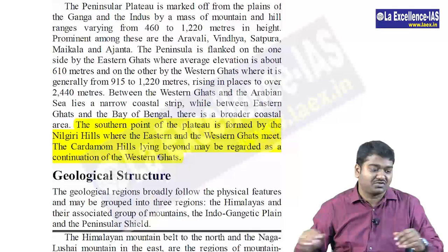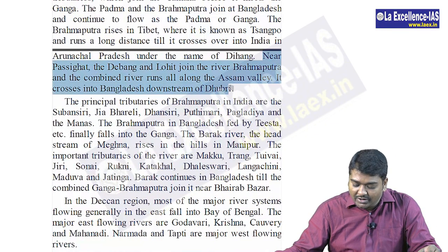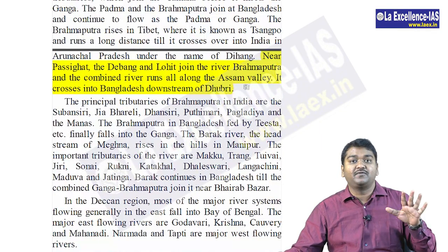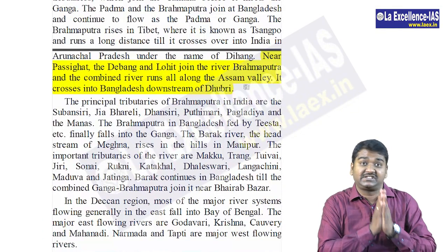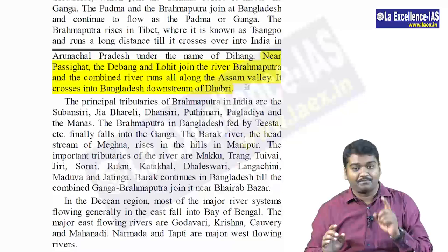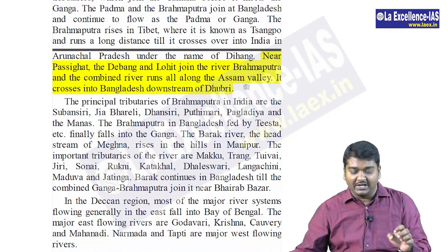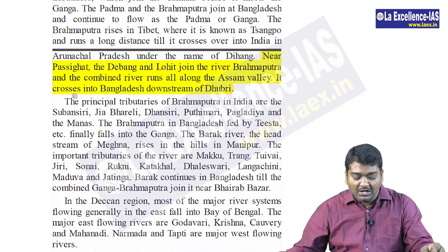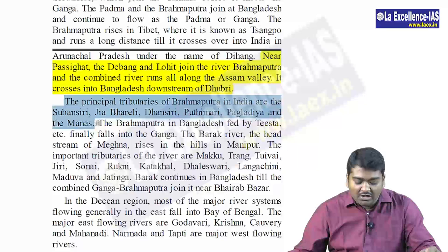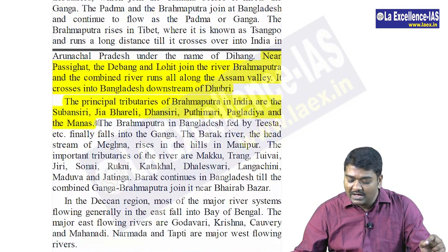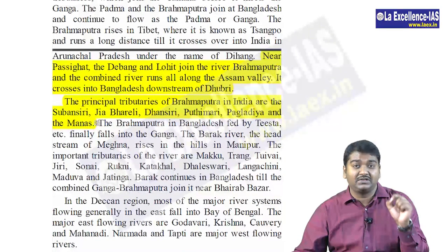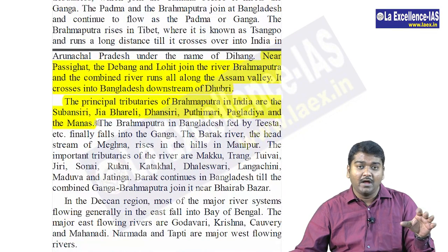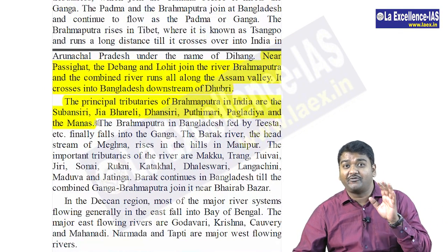In the last two lines, they actually talk about the Dibang and Lohit rivers which join the Brahmaputra and the combined river flows along the Assam valley. This question was asked — in which state are Dibang and Lohit present, and they are tributaries of what? They are tributaries of Brahmaputra. Then in page 3 last line and page 4 first line, there is information about Brahmaputra and Barak. The principal tributaries of Brahmaputra in India are Subansiri, Jiadhol, Dhansiri, Puthimari, Pagladiya and the Manas. They may ask which of the following are tributaries of Brahmaputra. This year, tributary of Brahmaputra is also important — you might have also heard of Namami Brahmaputra.